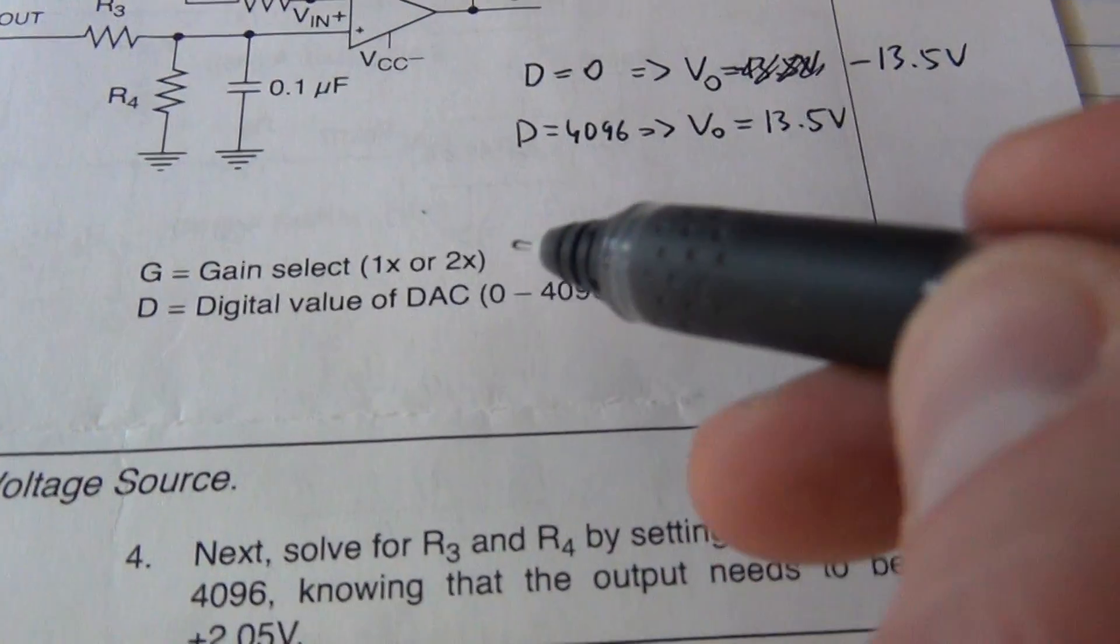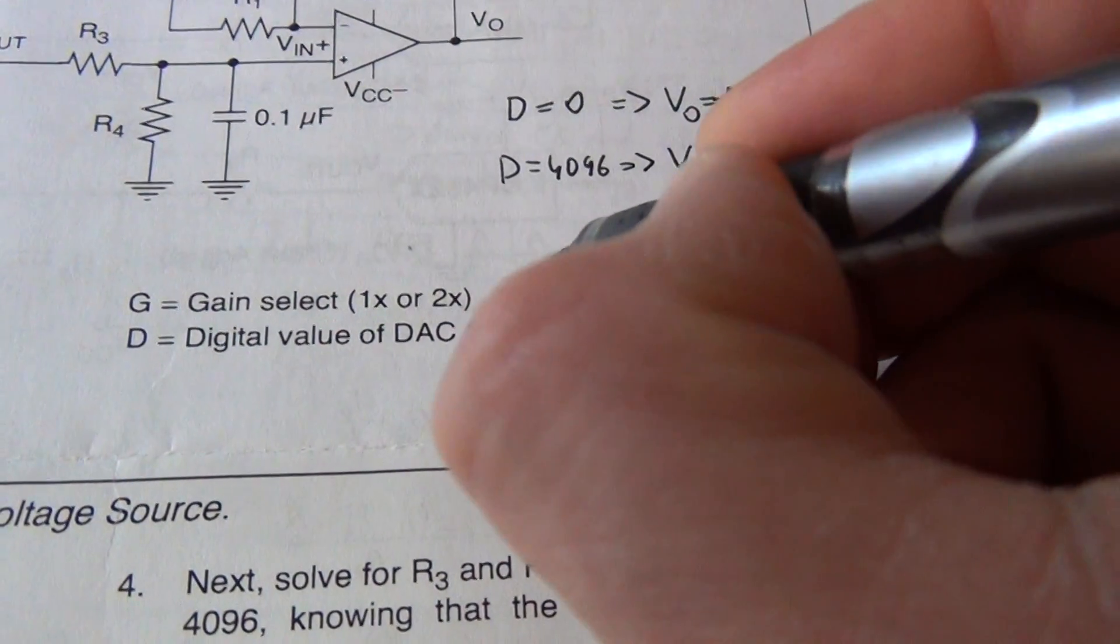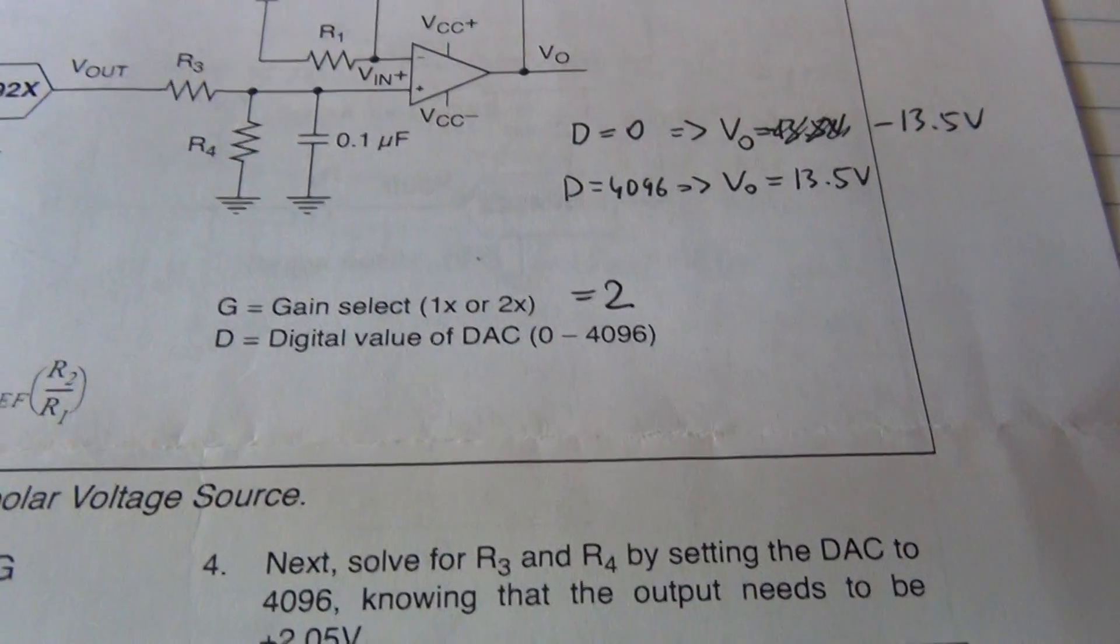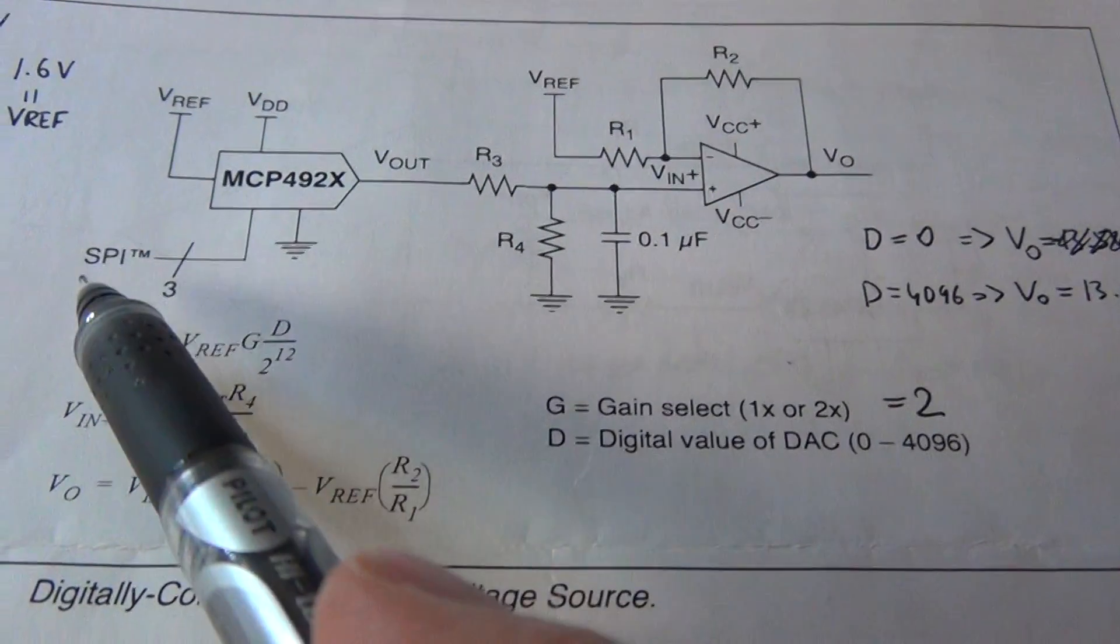Gain select is going to be equal to 2 in our case. That's programmable using the SPI interface.